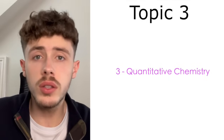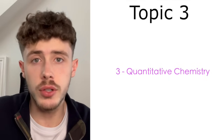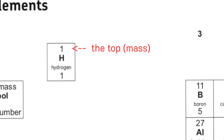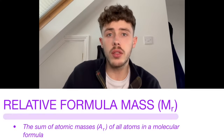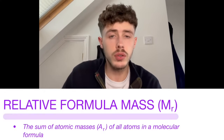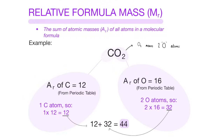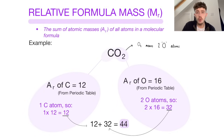Topic number 3: quantitative chemistry. Going back to those mass numbers that we talked about from the periodic table, you need to understand how to use those to work out things like the relative formula mass, as you can see on screen. Here is an example where I calculate the relative formula mass of carbon dioxide. The same method can be applied to more complicated compounds and mixtures as well.